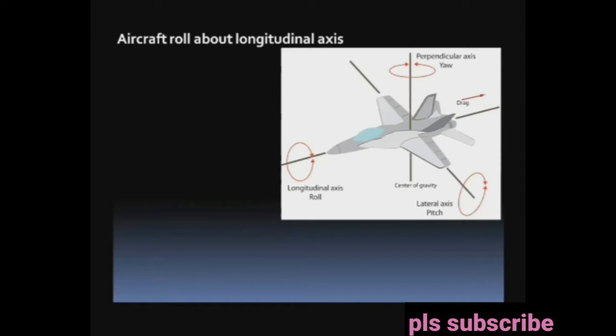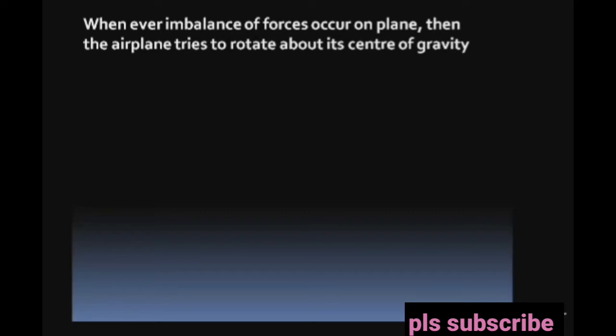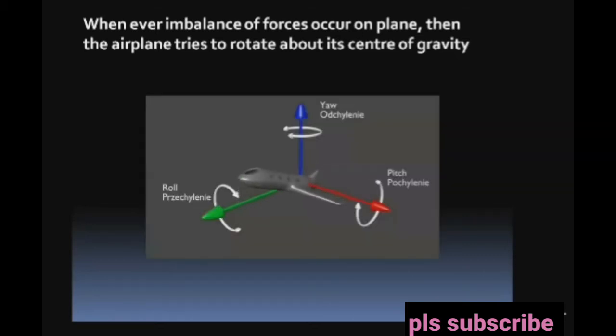Aircraft roll about the longitudinal axis, pitch up and down about the lateral axis, and yaw about the perpendicular axis. Whenever an imbalance of forces occurs on the plane, the airplane tries to rotate about its center of gravity.